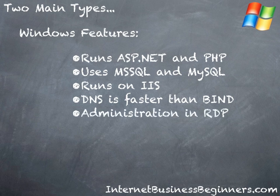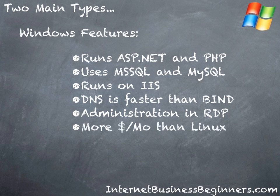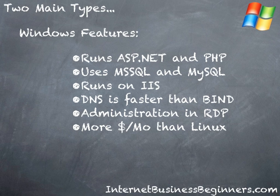Administration is done using remote desktop, a system that allows you to take your desktop on your computer and attach it directly to the server, giving you a direct connection as though the server was right there on your desktop. The downside is it tends to cost a little bit more per month than a Linux machine — a few dollars more whether you're going with a basic web server, a virtual private server, or a dedicated server. The reason is Microsoft Windows and associated software has licensing fees, whereas most software that runs on Linux doesn't.